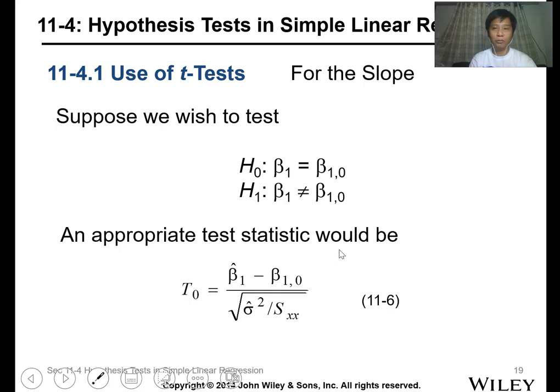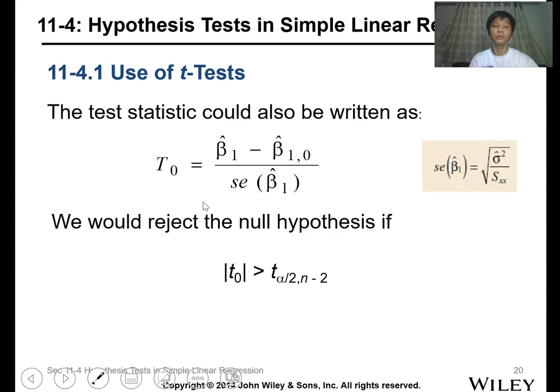For this case, the variable is the slope. We have the null hypothesis, the alternative hypothesis, and the statistical test, which is the t-test. The null hypothesis is that your slope value beta 1 equals beta 1 naught, and the alternative is not equal, meaning it doesn't follow your predicted value.